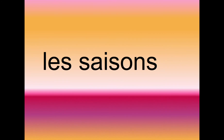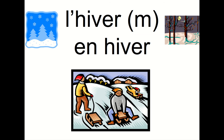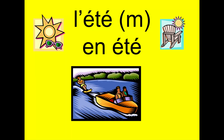Excellent. Et finalement, les saisons — which means the seasons. So to say winter, we say l'hiver. L'hiver. The little M there means that winter is a masculine word. But if we want to say in winter, we say en hiver. Summer is l'été. L'été. Again, the M means that l'été is a masculine word. And if we want to say in summer, we say en été.